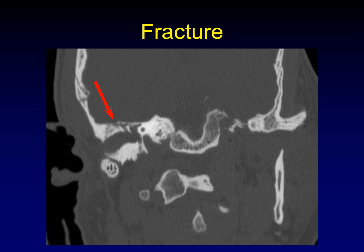Here's an example of a temporal bone fracture running up through the tegman. It's sometimes easiest to appreciate on coronal imaging; I find sagittal imaging helpful to appreciate the superior extent of the fracture. Remember, these are not fracture lines — they are fracture planes. Once it comes up through the tegman, it must continue out through the skull somewhere, so it's important to find the full extent of those fractures.